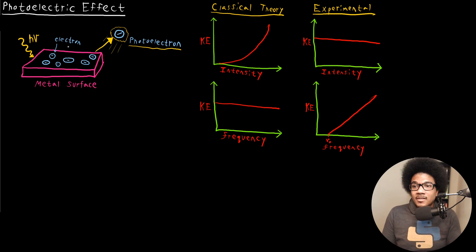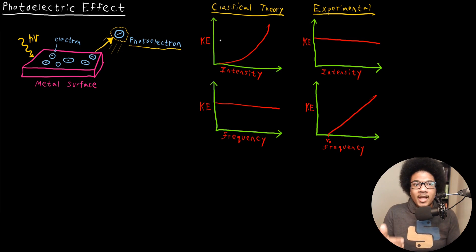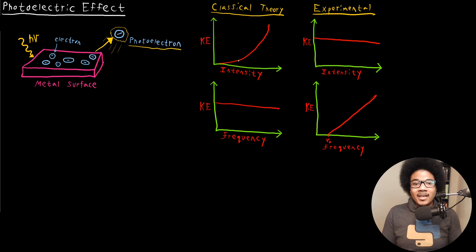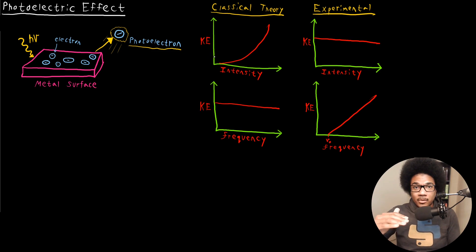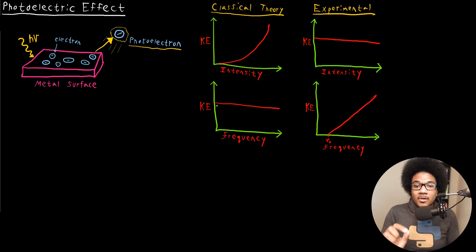This was a conundrum for classical theory for quite a while. Classical theory, looking at intensity and frequency compared to the kinetic energy of the ejected photoelectron, predicts that the intensity of that radiation will affect the kinetic energy. Electromagnetic radiation with a higher amplitude would produce photoelectrons with a higher kinetic energy — predicting an exponential increase with respect to intensity — and it should have no dependence on the frequency.